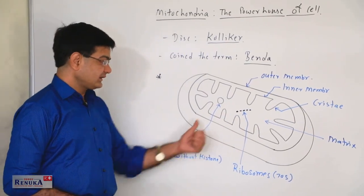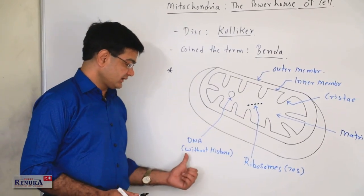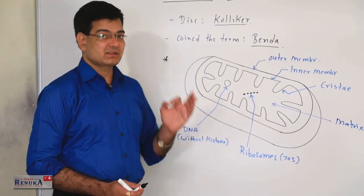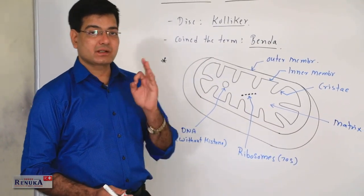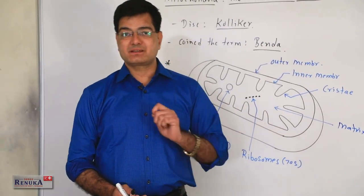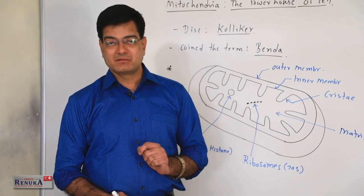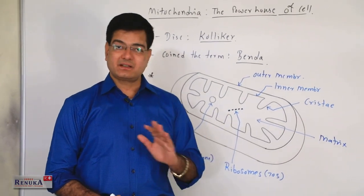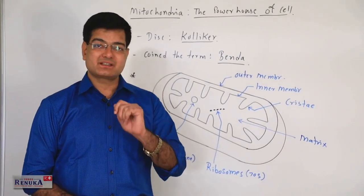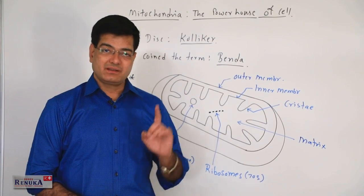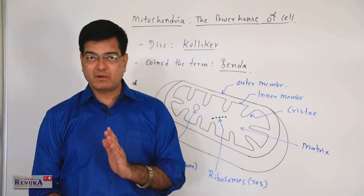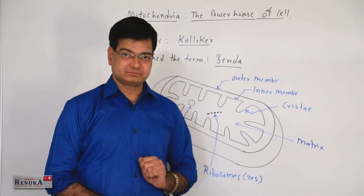DNA is present in the mitochondria but without histone. Histone is the protein required for chromosome synthesis. But in the mitochondria there are no chromosomes, so only DNA is present and histones are not required.